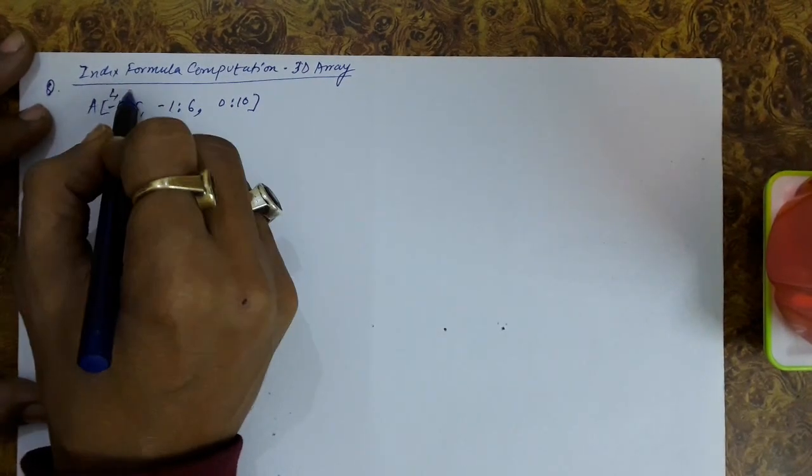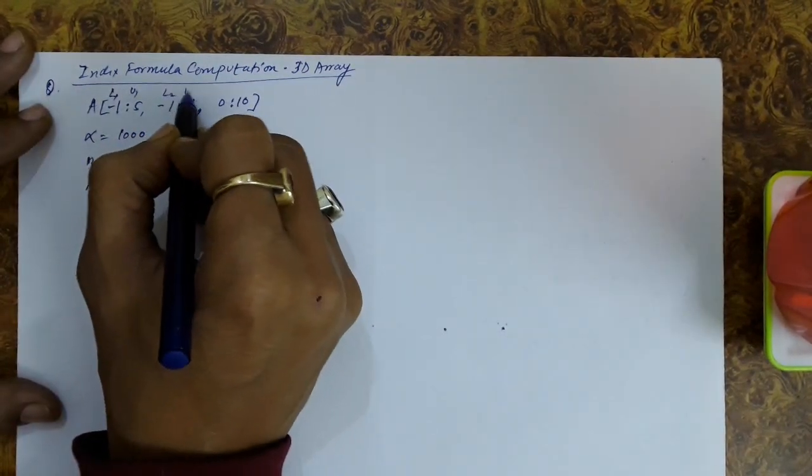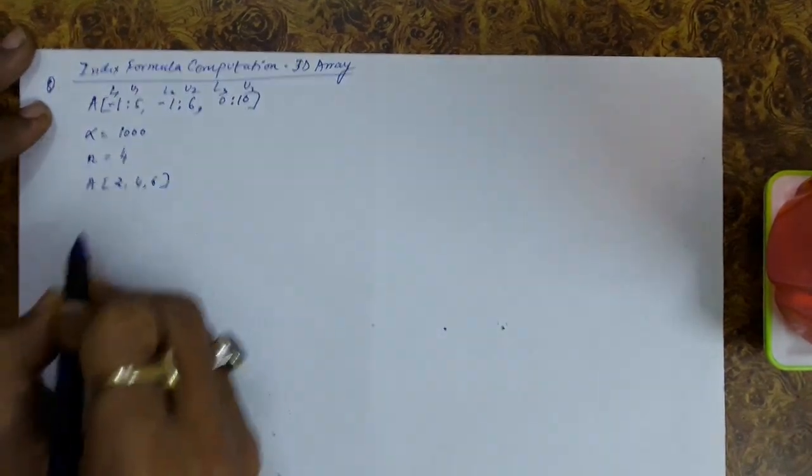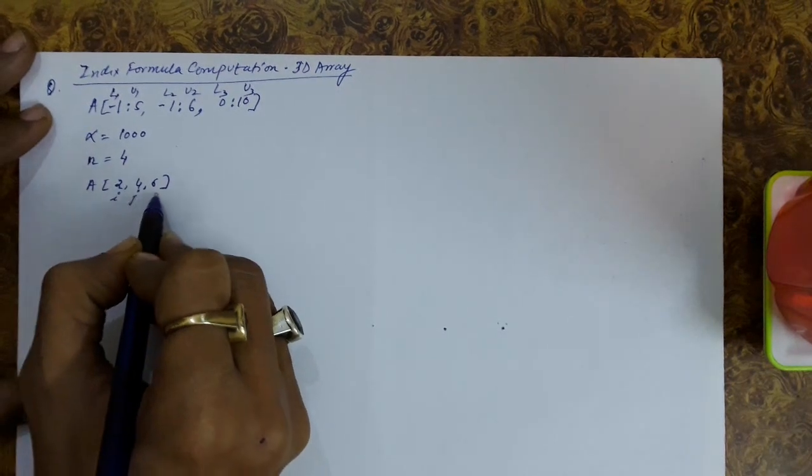So this is l1, this is u1, this is l2, this is u2, this is l3, this is u3, alpha and n, this is i, this is j and this is k.